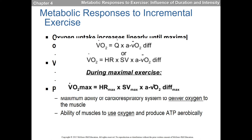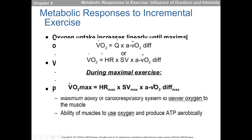The Fick equation: VO2 equals cardiac output — which is heart rate multiplied by stroke volume — multiplied by the arteriovenous oxygen difference, the a-vO2 difference. That's arterial minus venous oxygen content, representing what's taken up. That is the main thing I want you to know from this section.